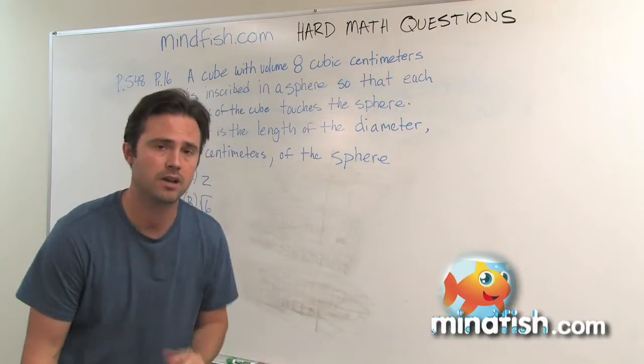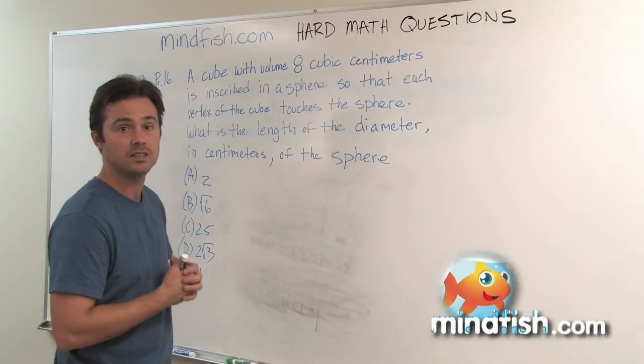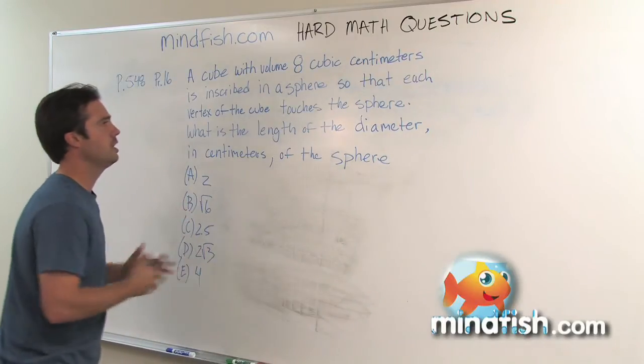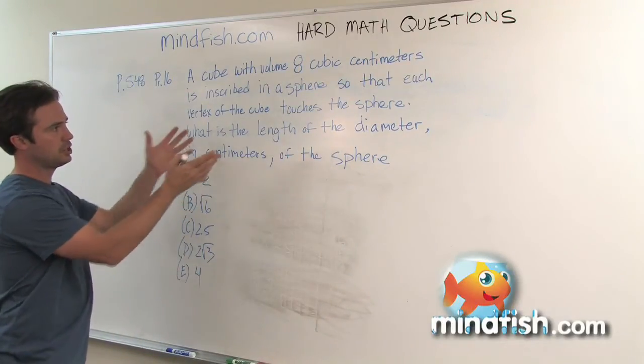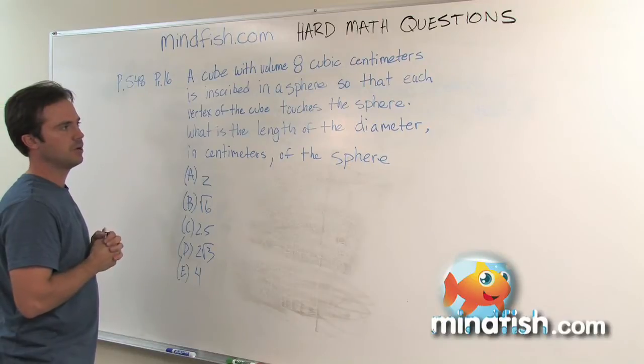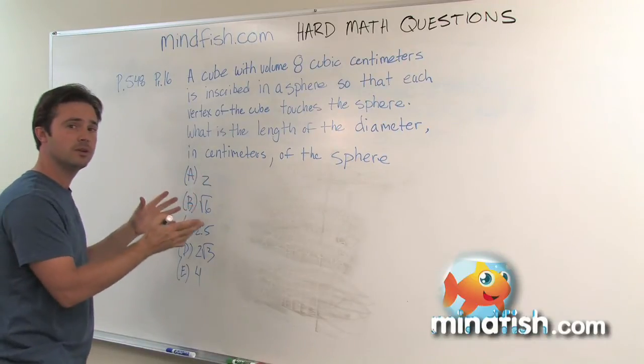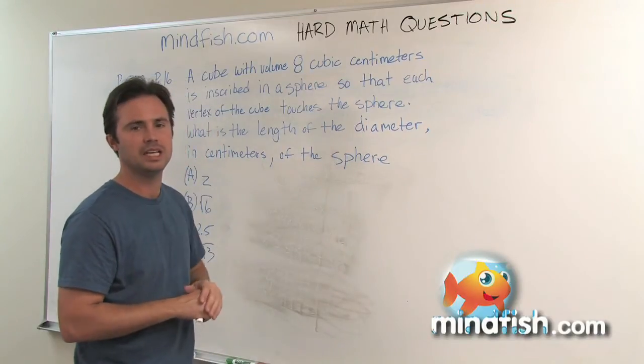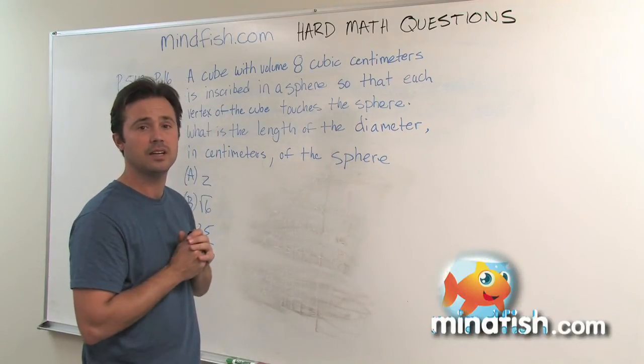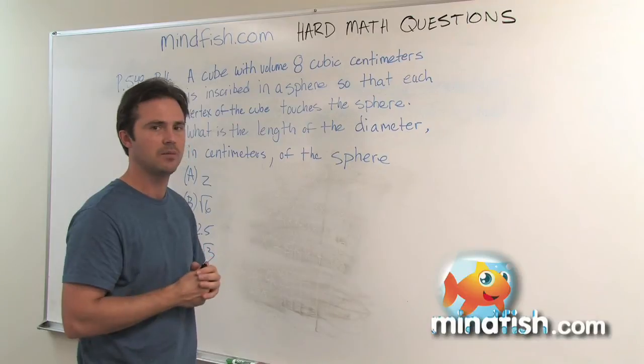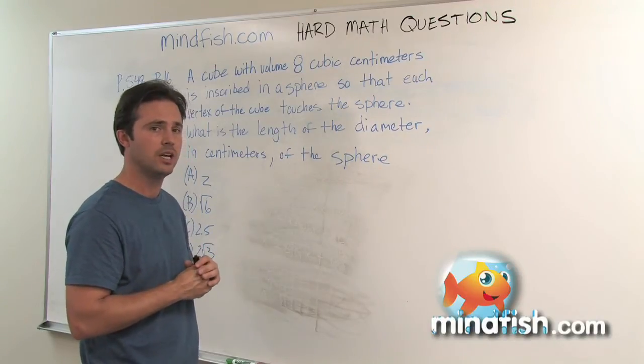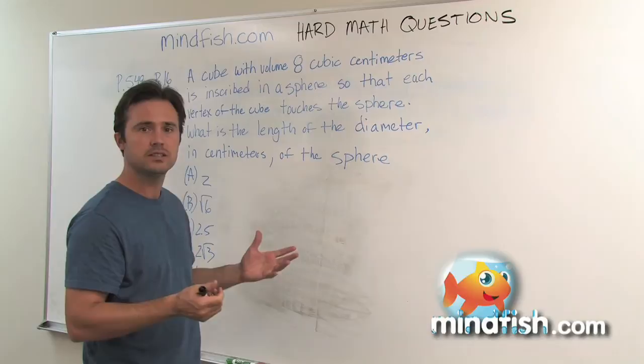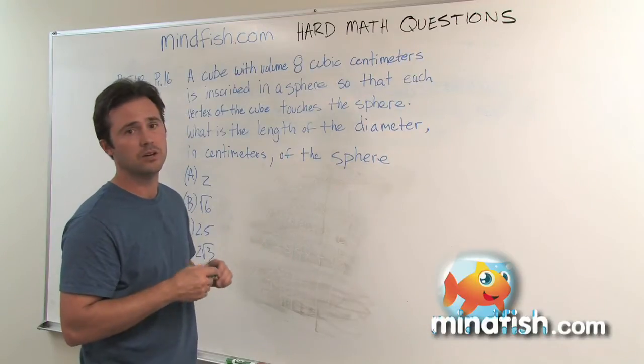We're going through some of the hardest math questions in the book and helping you get a grip on how to do them. This question is a volume slash spatial question relating a sphere and a cube. Unfortunately, an equation that really makes this question easy isn't given in most textbooks and SAT study guides. It is in our coordinate geometry section - I call it three-dimensional distance, and that's what we're going to use to solve this.